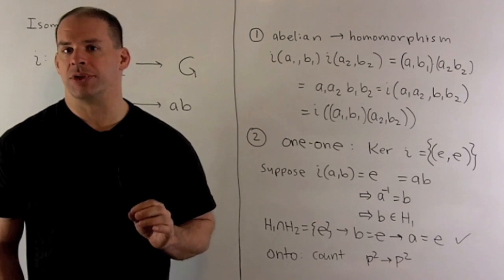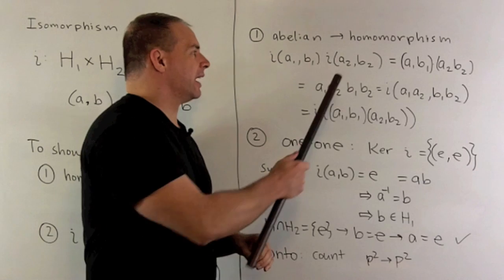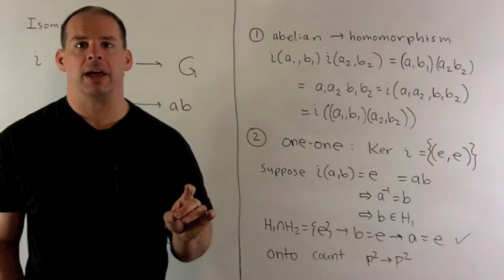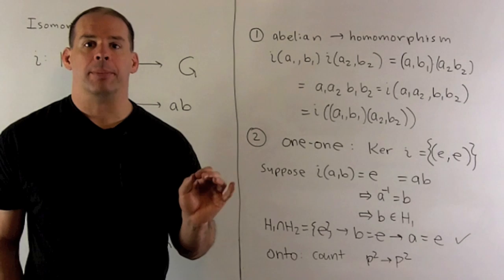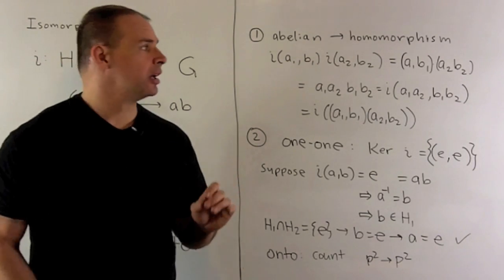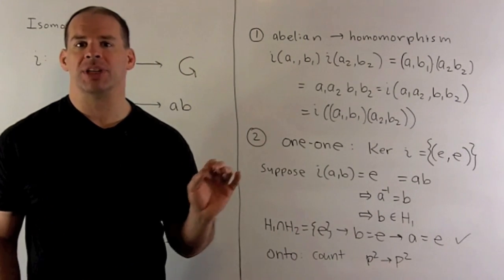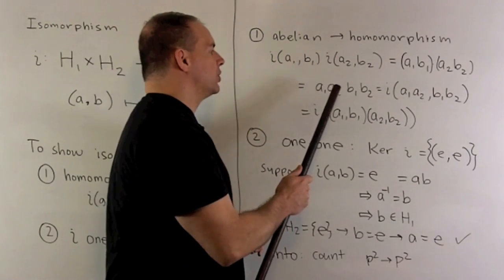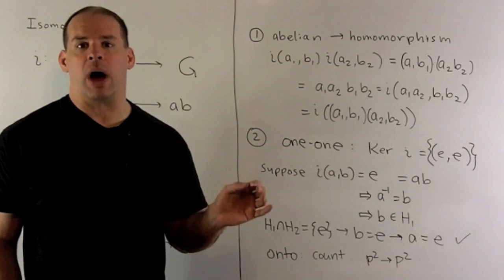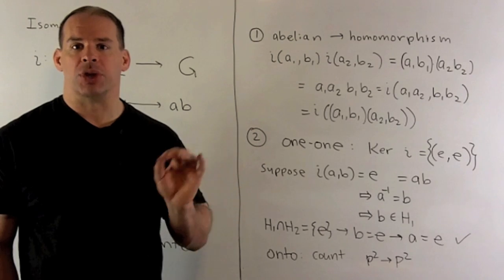To see the homomorphism property, I start with two ordered pairs, (a1, b1) and (a2, b2). We apply i and then we multiply. Now if I apply i to a pair, we just multiply the entries. So I want it with a1 b1 times a2 b2. We rearrange the terms, I get a1 a2 times b1 b2. Now I can either unwind or start with the answer and work my way back. So we'll start with the answer.